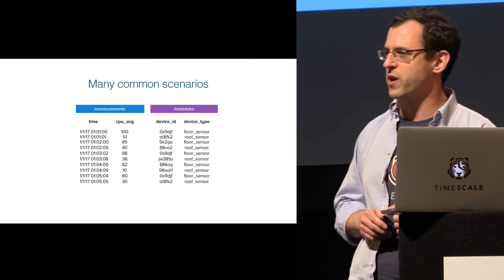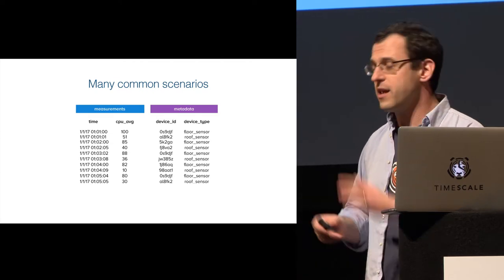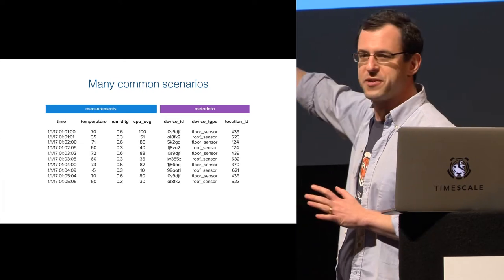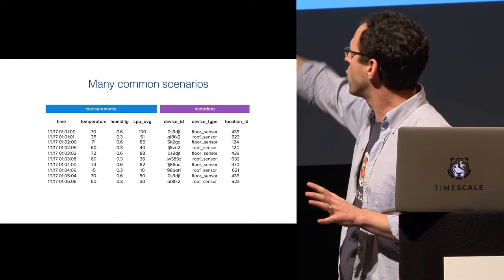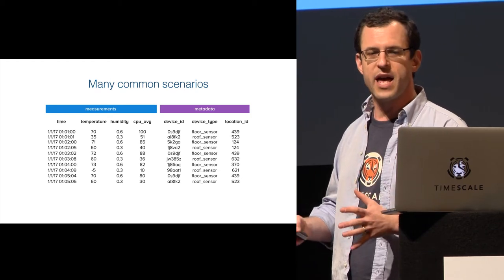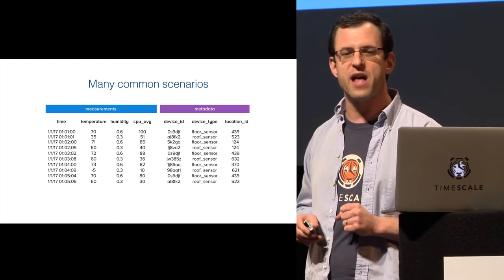If you think about it that way, the number of time series is actually the combinatorial - grows combinatorially with the number of unique tags you have. Now, of course, this isn't the only way to store it.